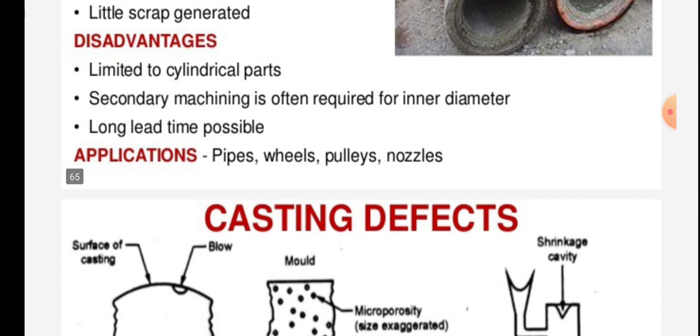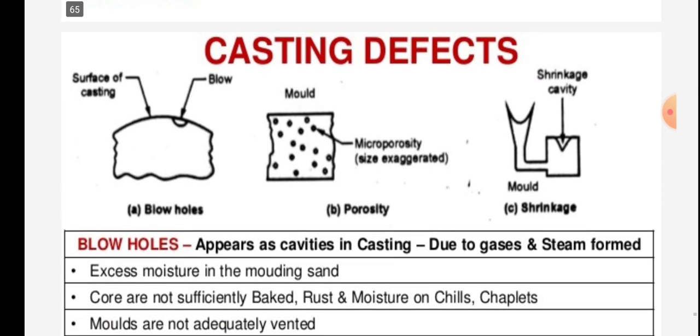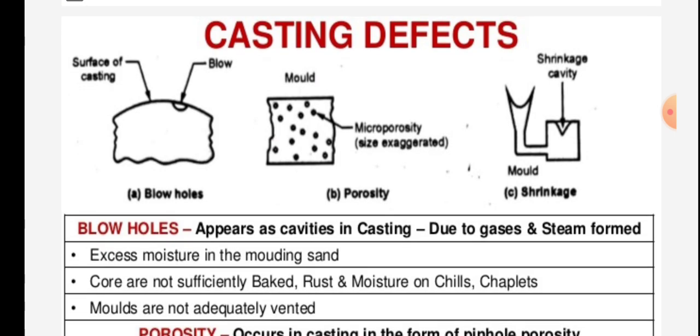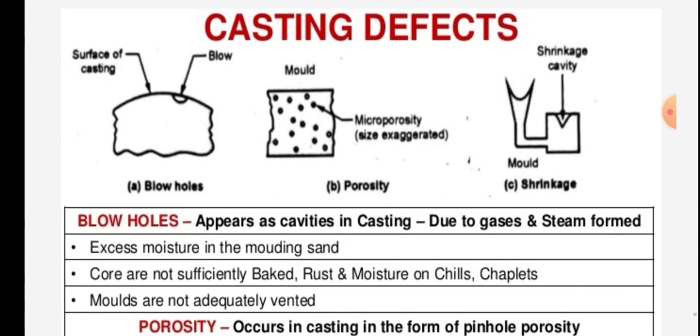Applications of centrifugal casting include pipes, wheels, pulleys, and nozzles. We will now see the casting defects, starting with defects on the surface of castings.